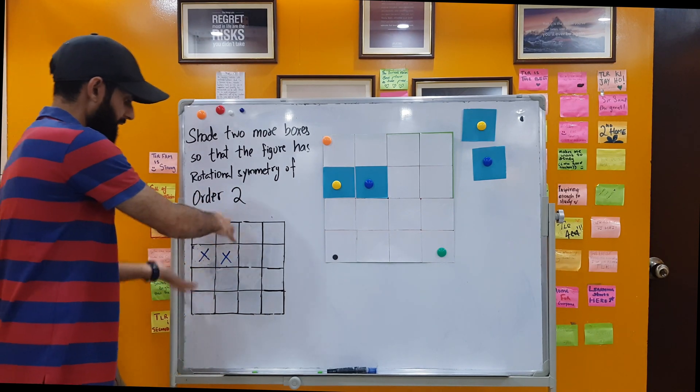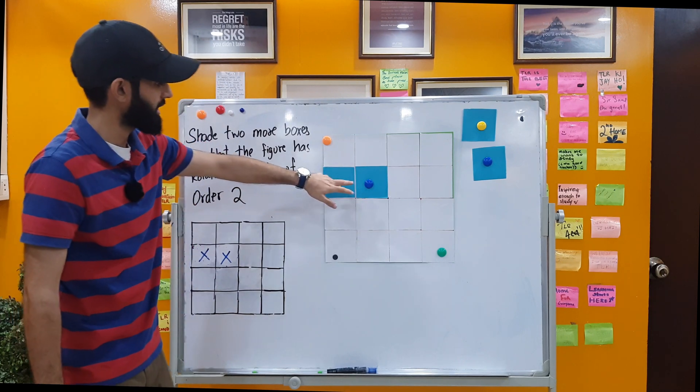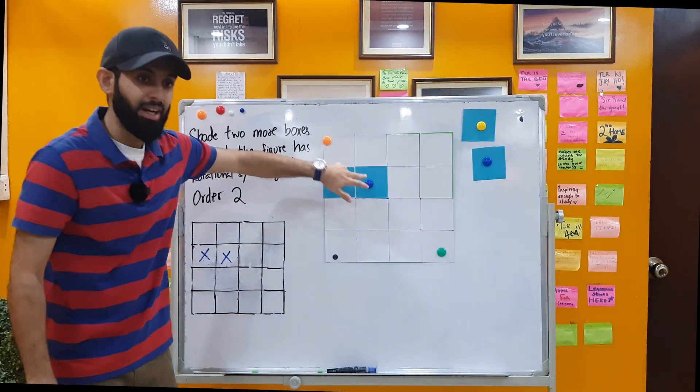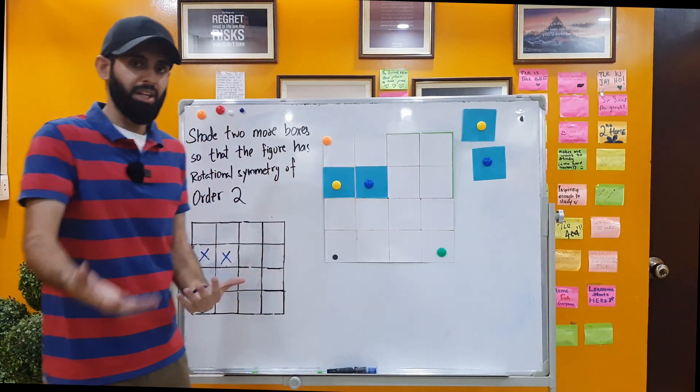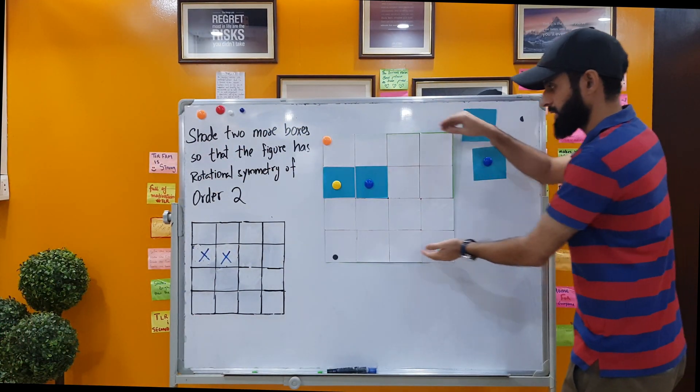So now what I'm going to do is, obviously I can't rotate this, so I'm going to rotate this model and then we're going to see where these two squares end up. And wherever they end up I'm going to shade those two squares for you.